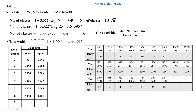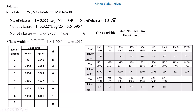Now we find the frequency for each class. For the class 30 to 1041, counting the data we find 20 values fall in this range. For the second class, 1042 to 2053, there are 3 data points. For the class 3066 to 4077, there are no data — frequency is 0. The summation of all frequencies must equal 25, matching the total number of data points.